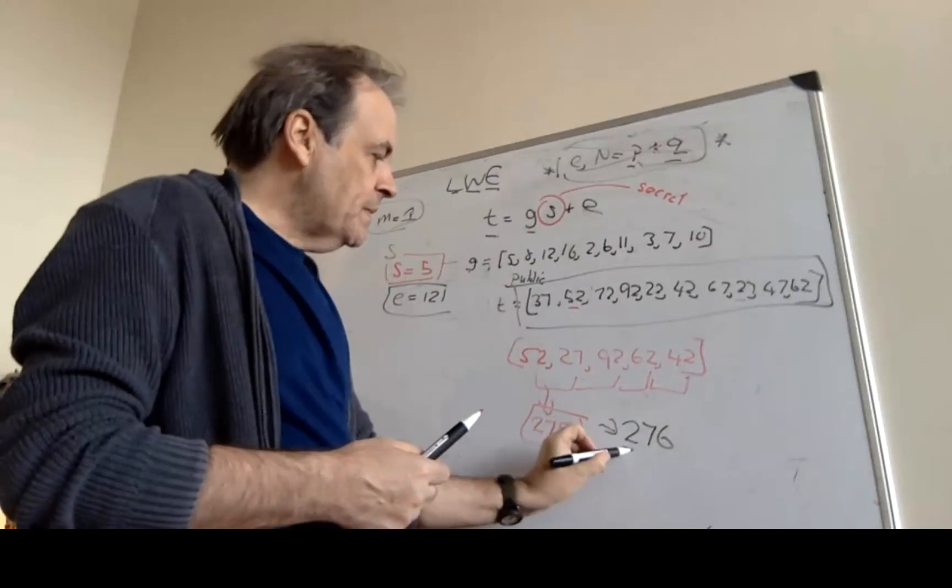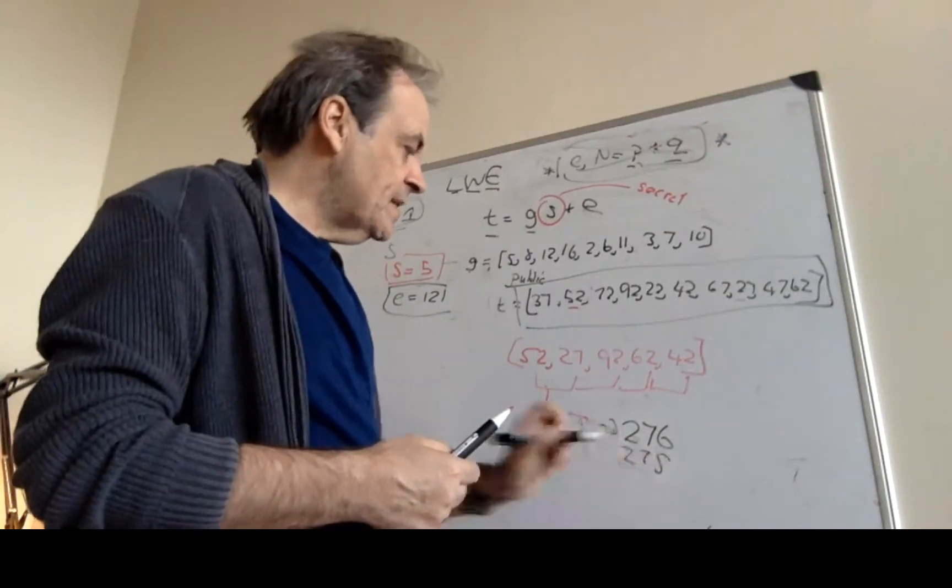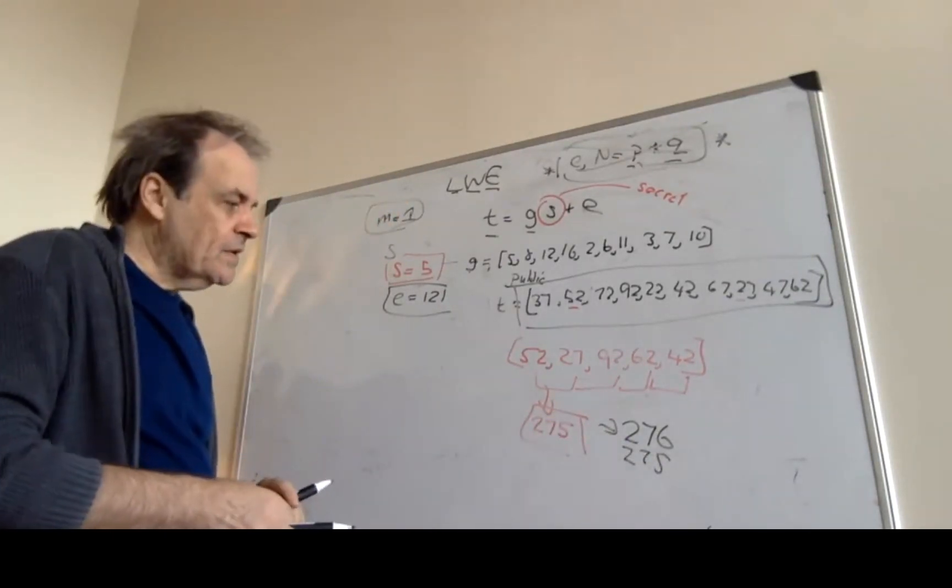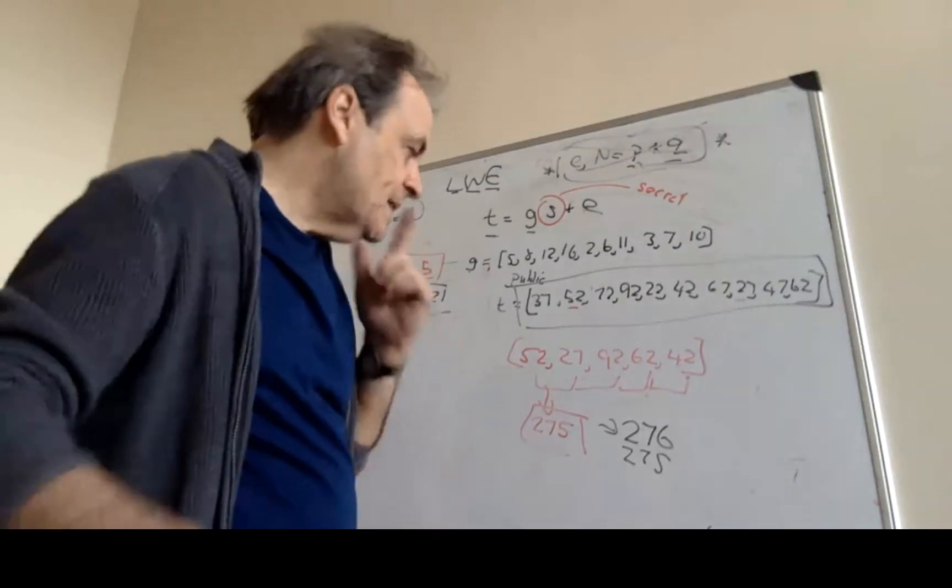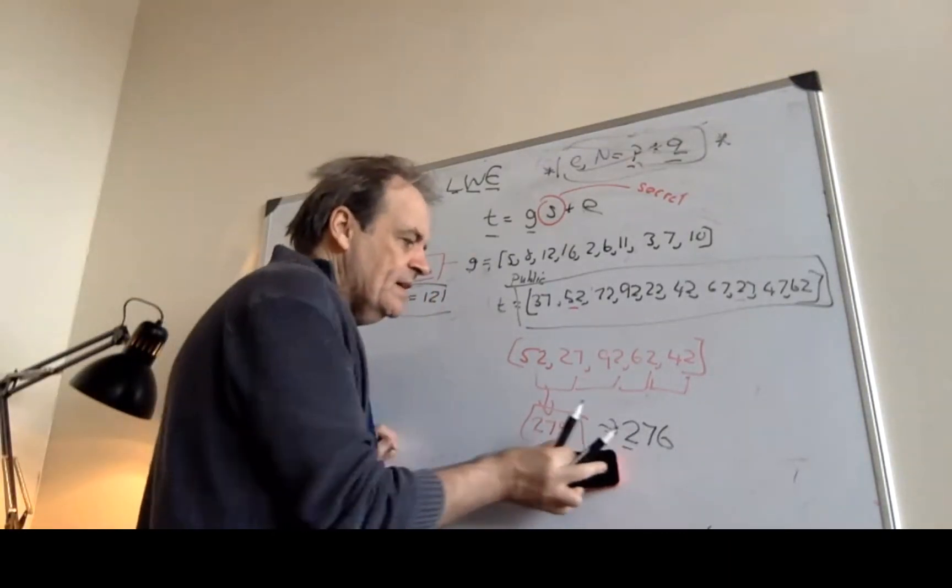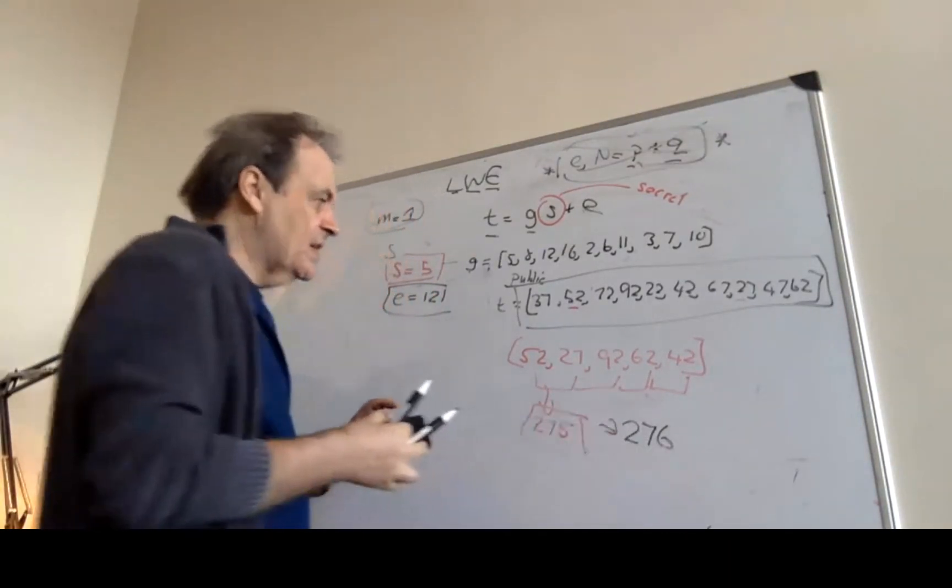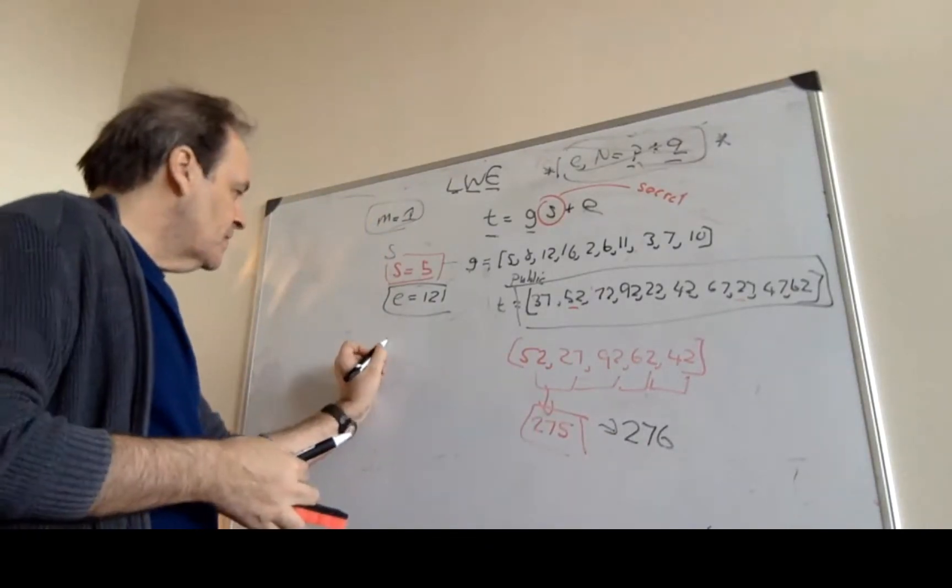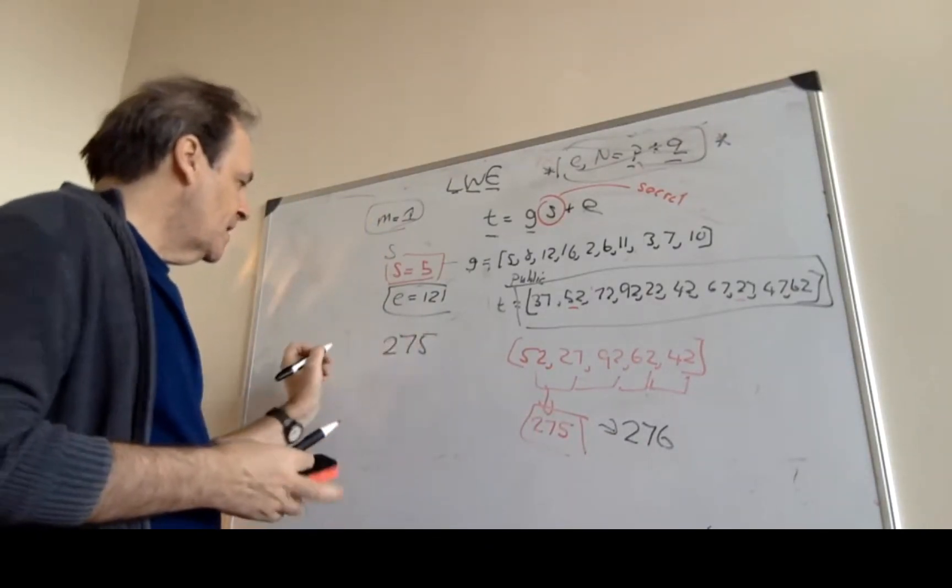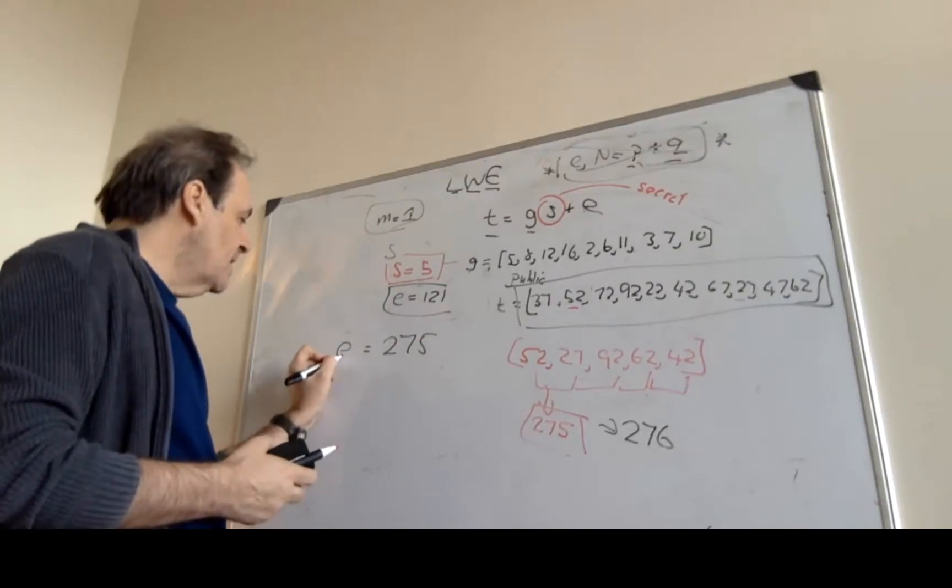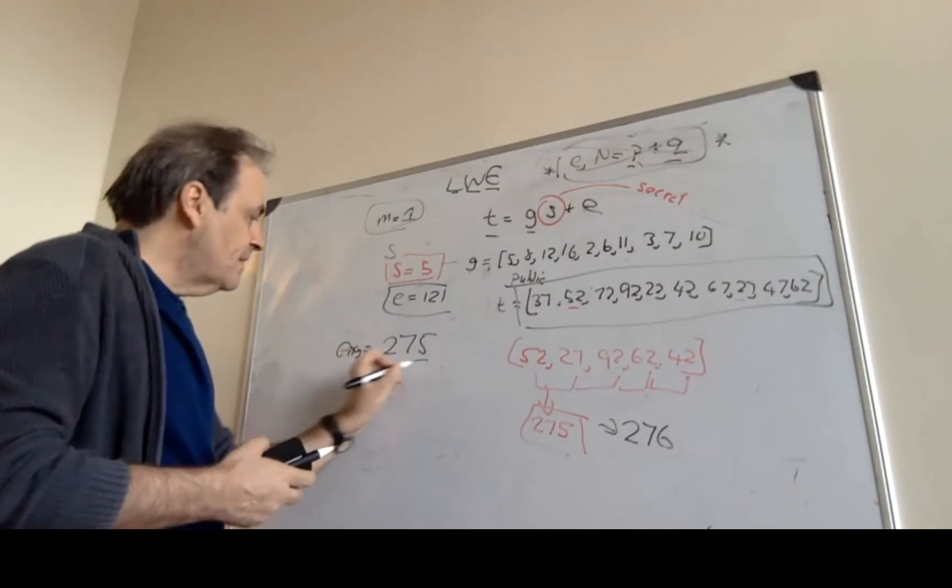If the value was a 0, we would transmit 275. So in this case we've transmitted 276 is the value that we're actually going to send. That's the encrypted value.